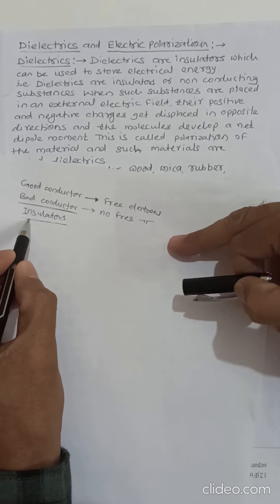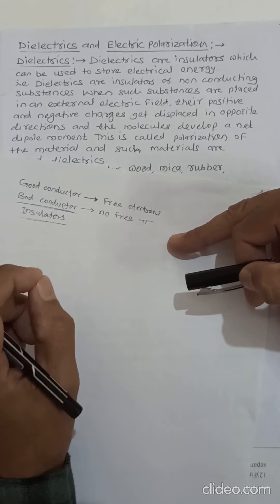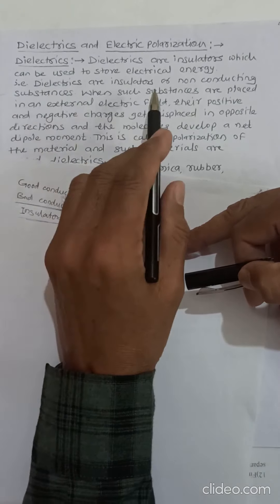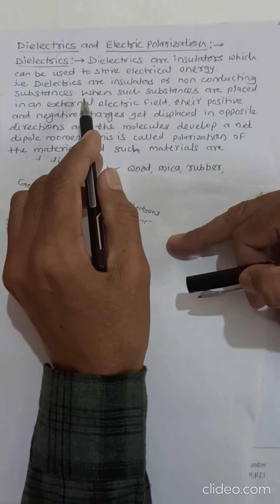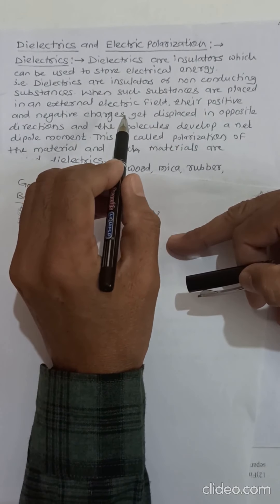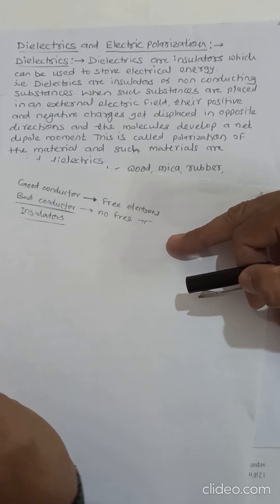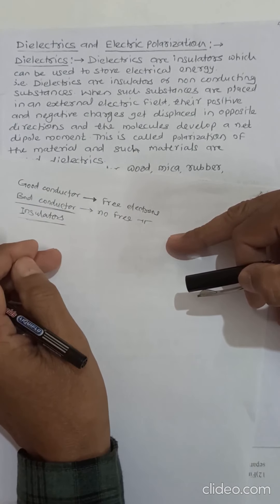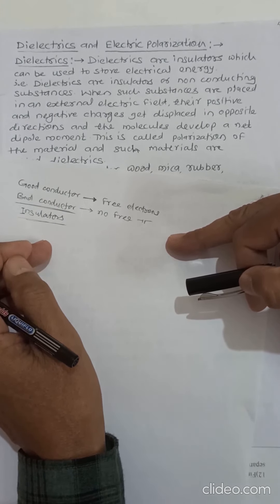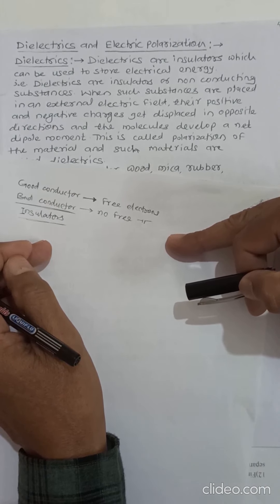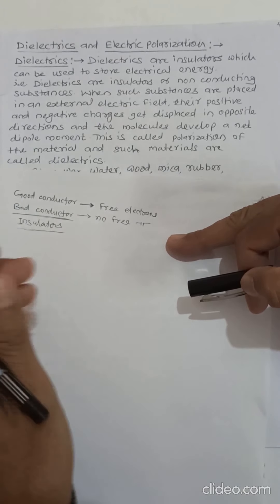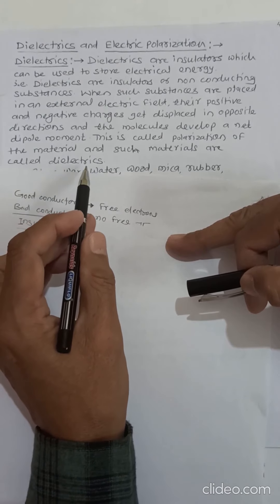These substances are used to store electric energy. Dielectrics are insulators or non-conducting substances. When such substances are placed in an external electric field, their positive and negative charges get displaced in opposite directions, and the molecule develops a net dipole moment. This is called polarization of the material, and such materials are called dielectrics.